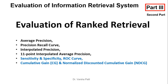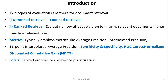Welcome to this channel. The topic of this video is evaluation of information retrieval systems, and the subtopic is evaluation of rank retrieval. Various types of metrics are used for rank retrieval. Two types of evaluation exist for document retrieval: unranked retrieval and ranked retrieval. Rank retrieval evaluates how effectively a system ranks relevant documents higher than less relevant ones. Typical metrics include average precision, mean average precision, interpolated precision, 11-point interpolated average precision, sensitivity, specificity, ROC curve, normalized discounted cumulative gain, and cumulative gain. It focuses on relevance prioritization.